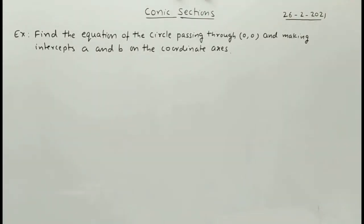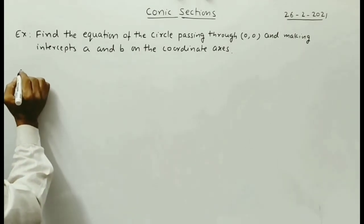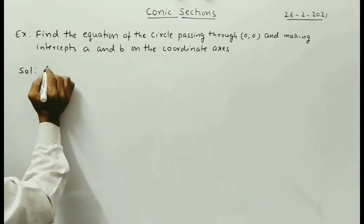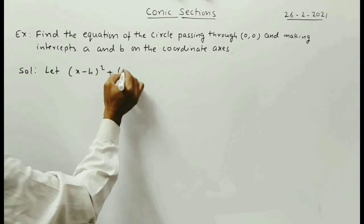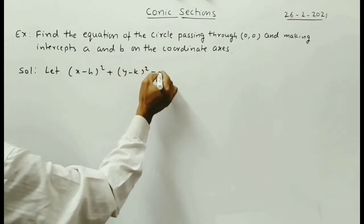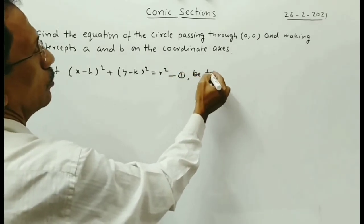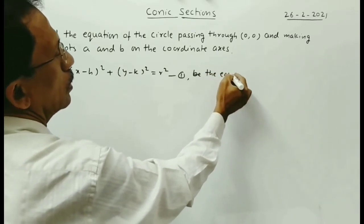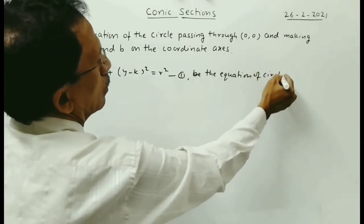Example: find the equation of the circle passing through the origin with coordinates (0, 0) and making intercepts a and b on the coordinate axes. Solution: let (x − h)² + (y − k)² = r² be the equation of the circle, say equation (1).